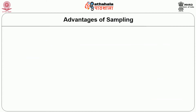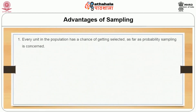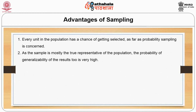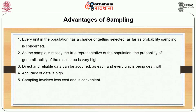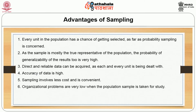The advantages of sampling are: every unit in the population has a chance of getting selected, as far as probability sampling is concerned. As the sample is mostly the true representative of the population, the probability of generalizability of results is very high. Direct and reliable data can be acquired as each and every unit is dealt with. Accuracy of the data is high. Sampling involves less cost and is convenient, and organizational problems are very low.